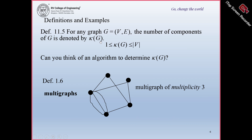For any graph, the number of components in G is denoted by K(G), and 1 ≤ K(G) ≤ V. That means the number of components will be between 1 and V. The number of components of G can be determined by identification.